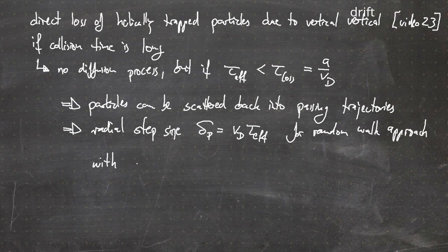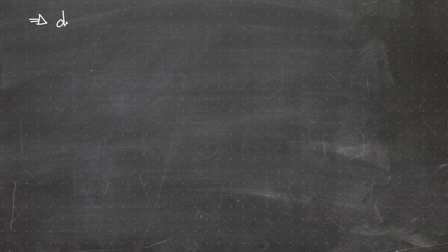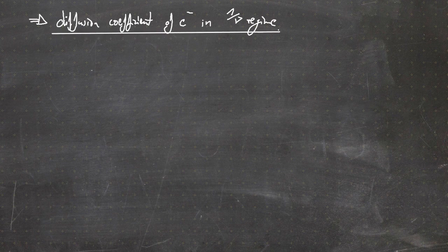For the effective collision time, in analogy to the banana particles in the tokamak, we assume the electron-ion collision time times ε_H, the helical ripple. For the vertical drift velocity we take the angle α equal to π/2, which is sufficient to account for de-trapping. These assumptions allow us to define a diffusion coefficient. Let's first look at the electrons in the so-called 1/ν regime — you will see in a moment why it is called that.